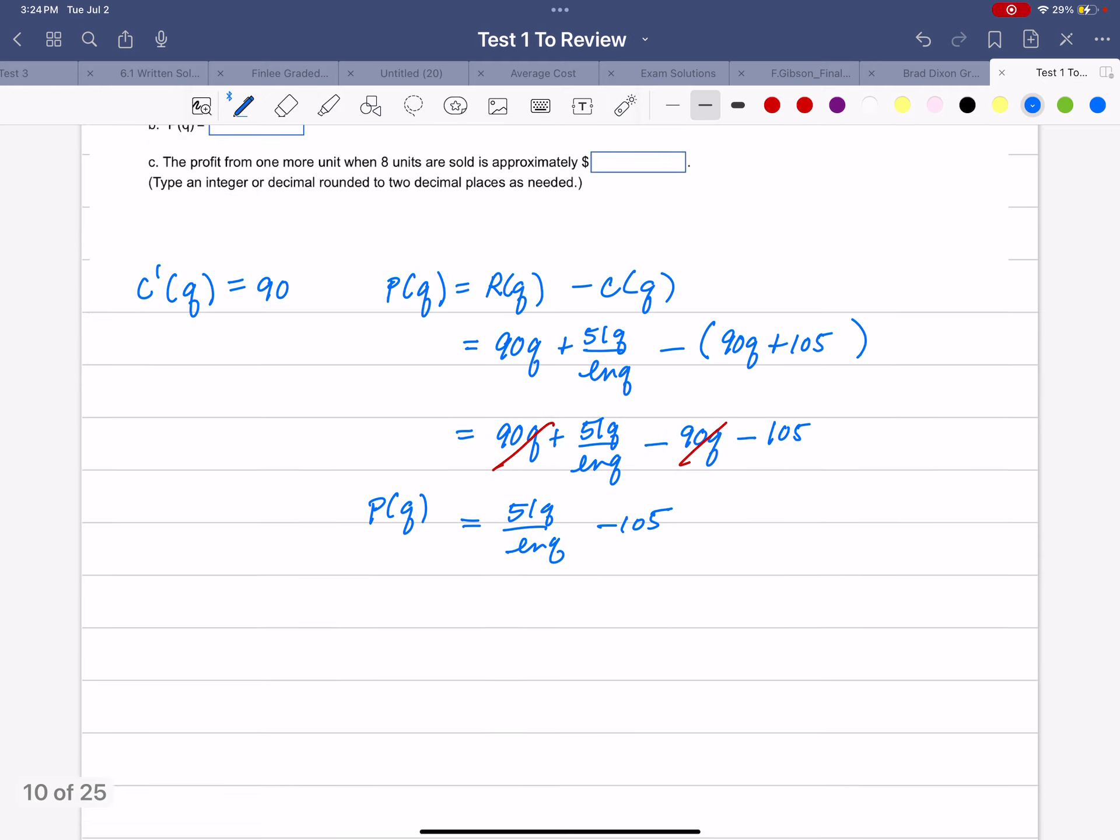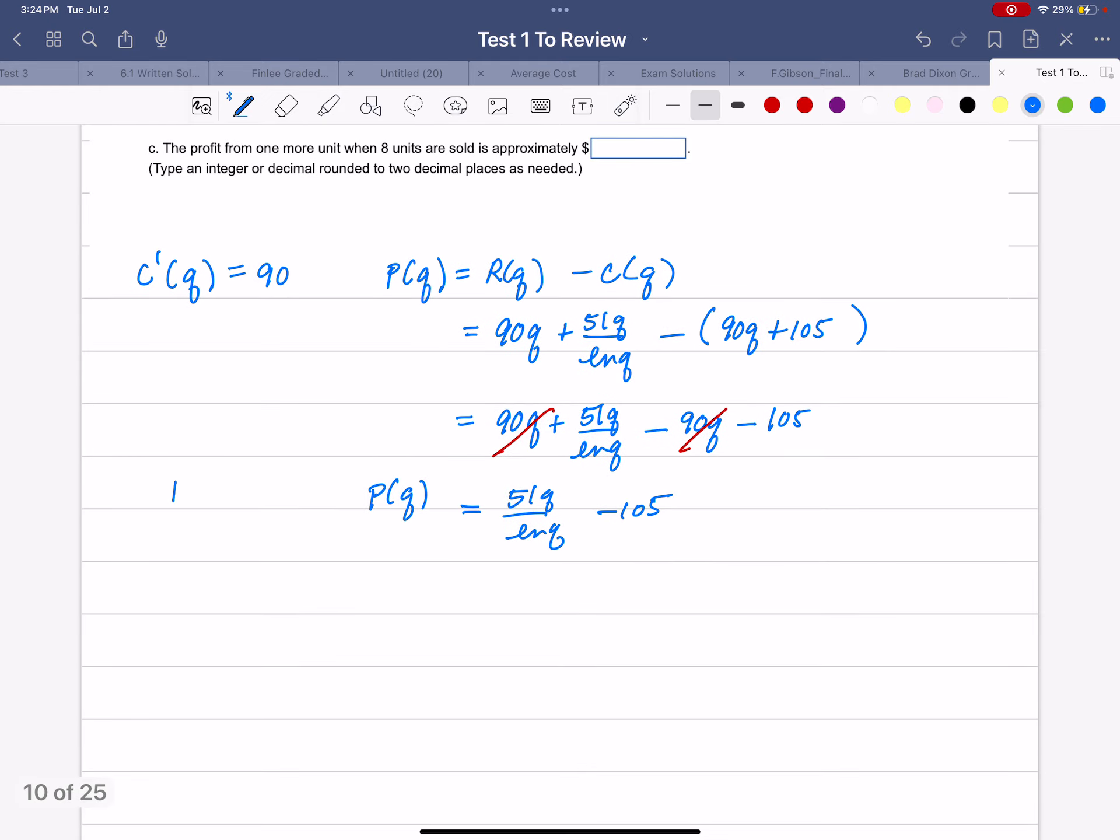So we have P(Q) = 51Q/ln(Q) - 105 as our profit function. But it's not the marginal profit, which is what they're asking in part C. So in part C, we have to take the derivative. It is a rational function.